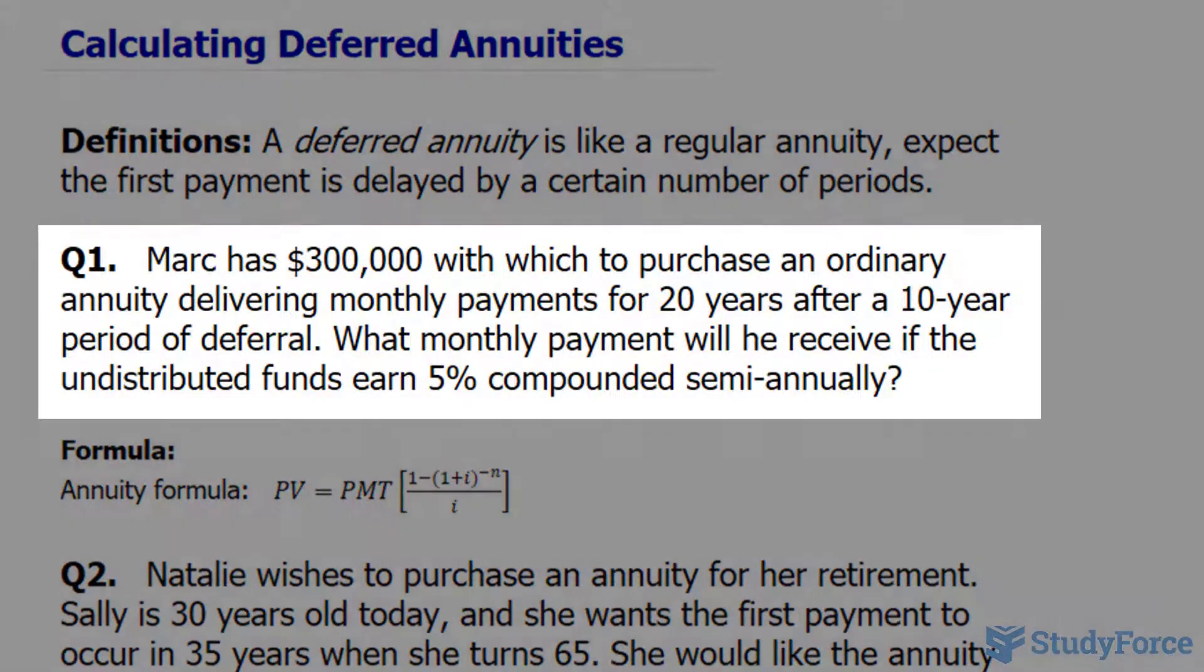Let's begin with question number one. Mark has $300,000 with which to purchase an ordinary annuity, delivering monthly payments for 20 years after a 10-year period of deferral. What monthly payment will he receive if the undistributed funds earn 5% compounded semi-annually?